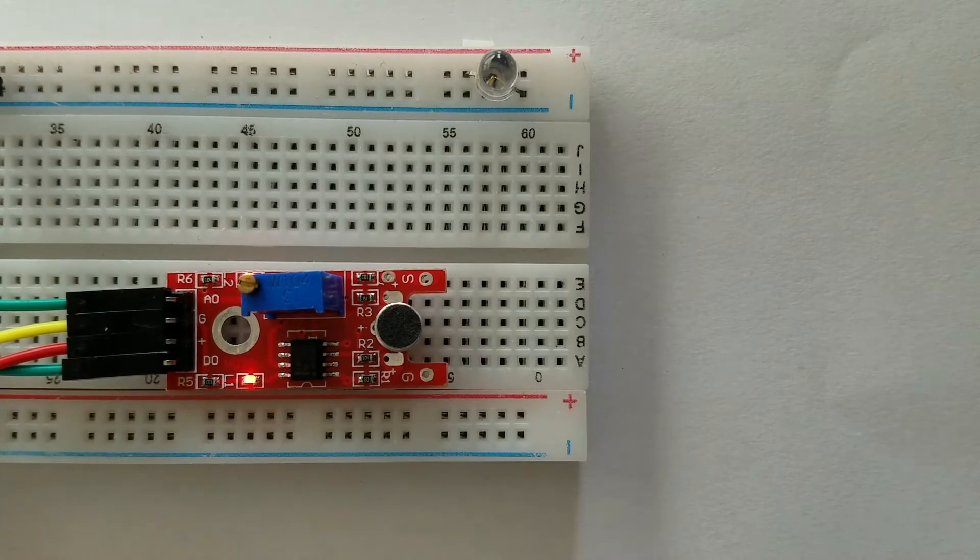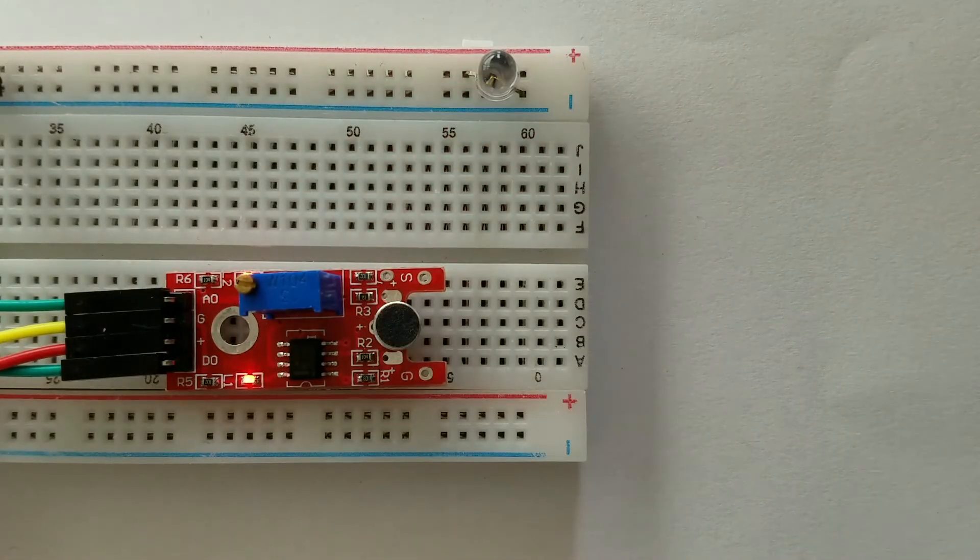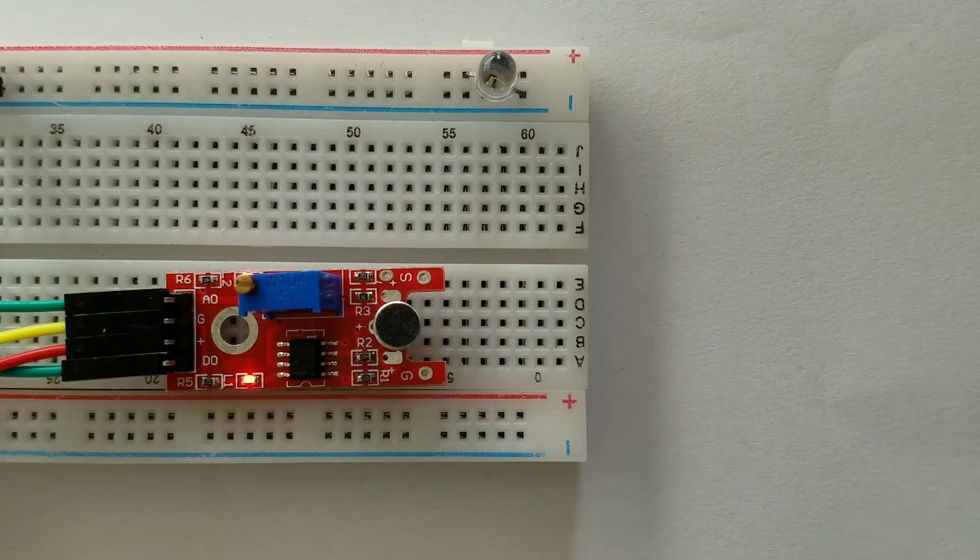This module is used to detect noise, claps, hits, etc. It allows us to detect when sound has exceeded a set point we have chosen so that the sensor can detect it.